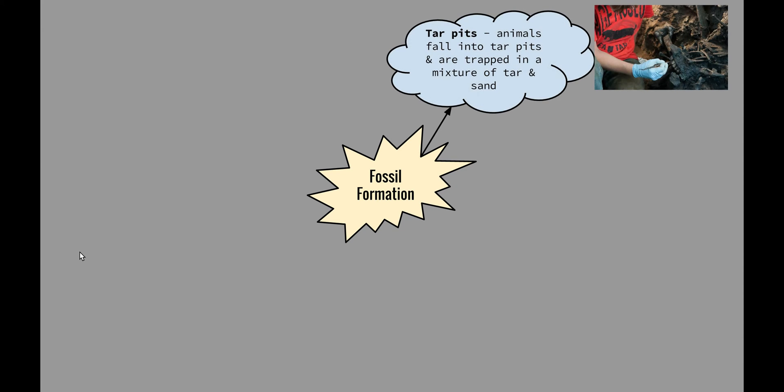So one of the ways that fossils can form is in what we call tar pits. So animals fall into this tar pit. It's very black, dense, sticky, viscous material, and they become trapped. Because it is so thick, we don't have that air and water coming in, so the organism doesn't decay. Basically, it solidifies within the tar.